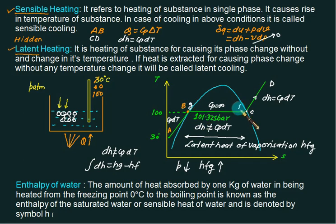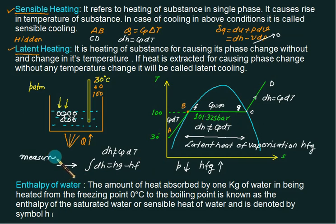The value of hfg is normally available from tables, or it can be calculated using the Clausius-Clapeyron equation, which will be introduced later. Observe that as pressure decreases, hfg increases, and at critical pressure this value becomes zero. For phase change, calculate enthalpy using hg − hf, where at point B we have the f-property and at point C we have the g-property.